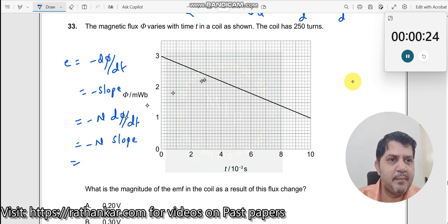So let us find out what is the slope here. Multiply this by n. n is 250 turns. So I will write this as minus 250 multiplied by what is the slope?